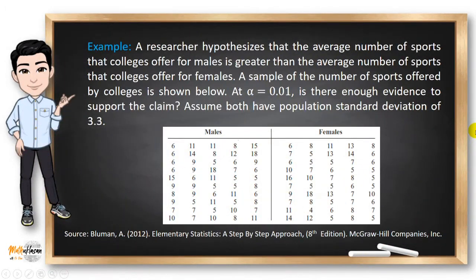Let's take a look at this example. A researcher hypothesizes that the average number of sports that colleges offer for males is greater than the average number of sports that colleges offer for females. A sample of the number of sports offered by colleges is shown. At alpha level 0.01, is there enough evidence to support the claim? Assume both have a population standard deviation of 3.3.